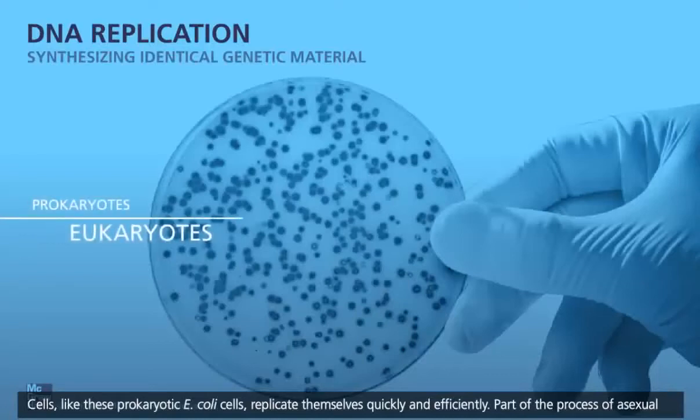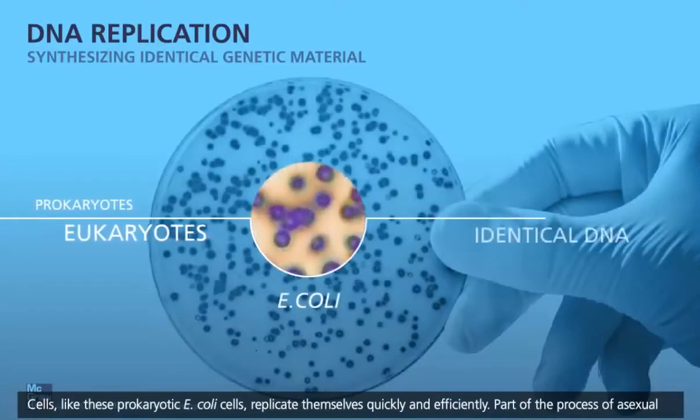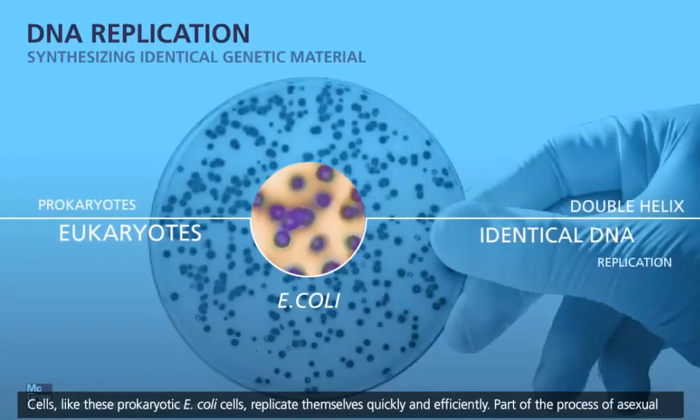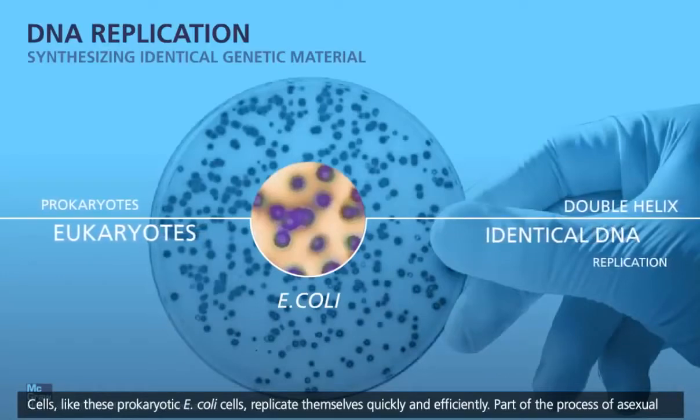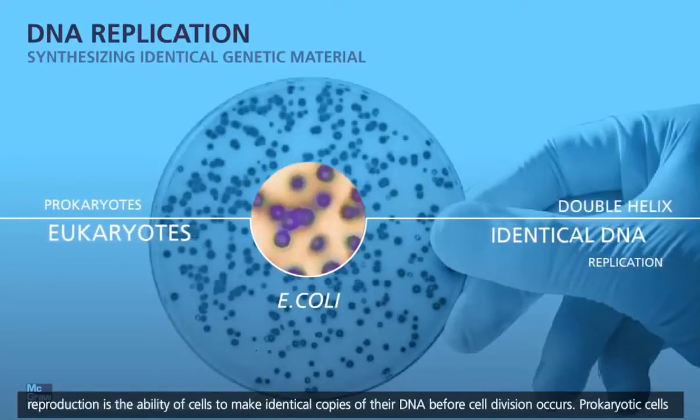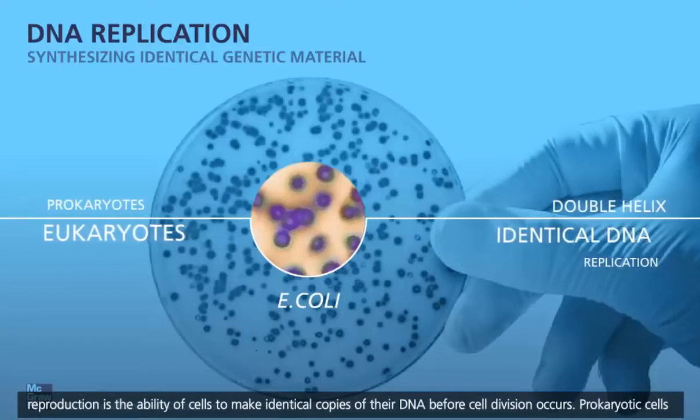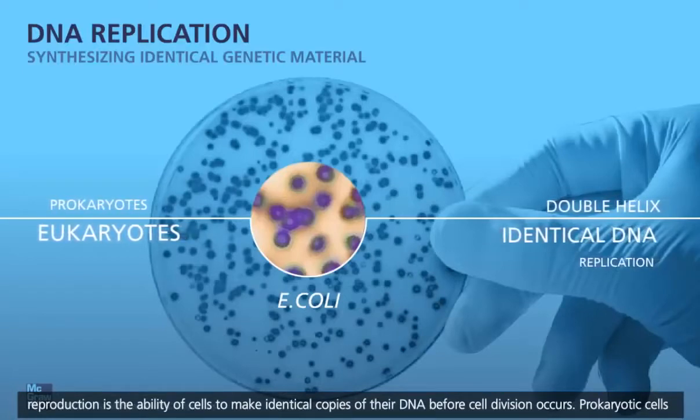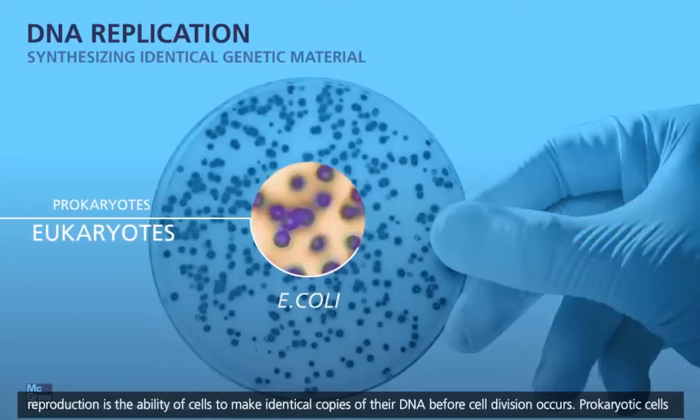Cells like these prokaryotic E. coli cells replicate themselves quickly and efficiently. Part of the process of asexual reproduction is the ability of cells to make identical copies of their DNA before cell division occurs.